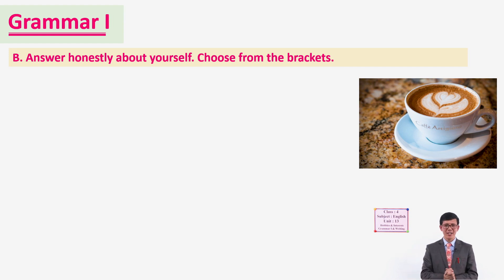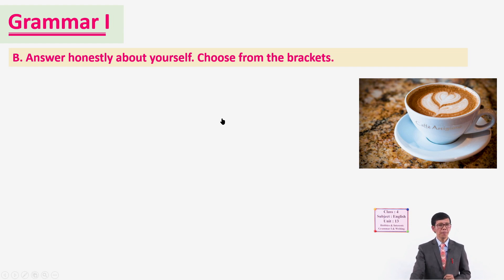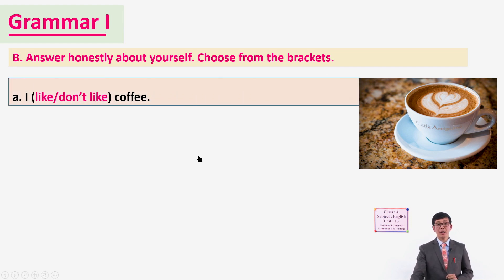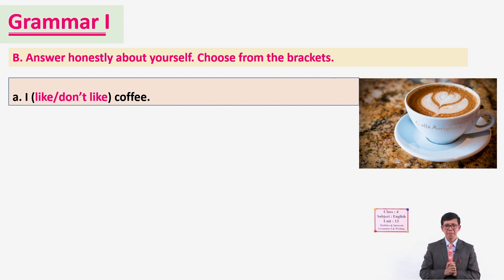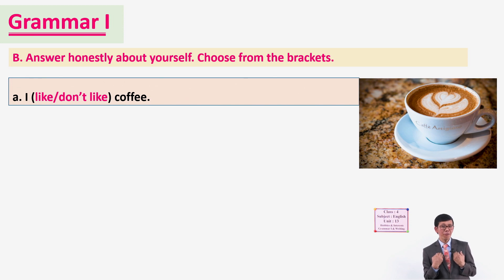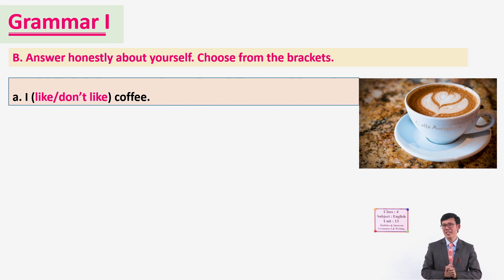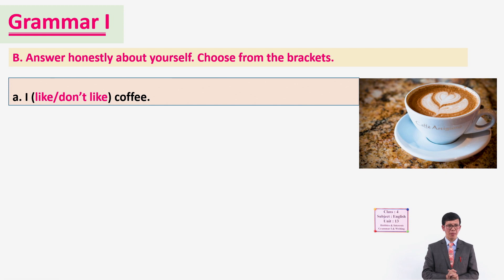Now let's move on to the grammar exercises. Answer honestly about yourself and choose from the bracket. The very first sentence: 'I like or don't like coffee.' You are supposed to give your honest answer. For example, in my case, I like coffee, so I can say 'I like coffee.' If you don't like it, you can say 'I don't like coffee.'